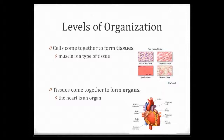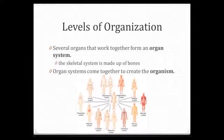The cells come together to form these types of tissues. When we put tissues together, we form organs — this is a picture of a heart, which is an organ. The stomach is an organ, the bladder is an organ. When we put several organs together and allow them to function together, they form an organ system. The skeletal system, for example, is an organ system made from the bones. When we put organ systems together, we create the organism, and there are 11 different systems that allow us to form the human body.